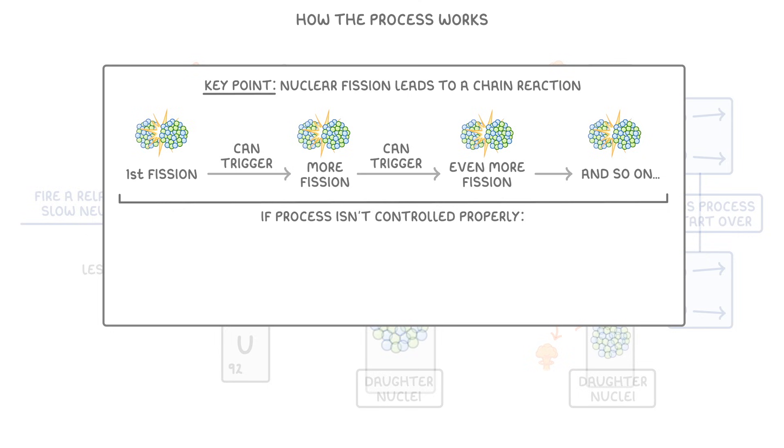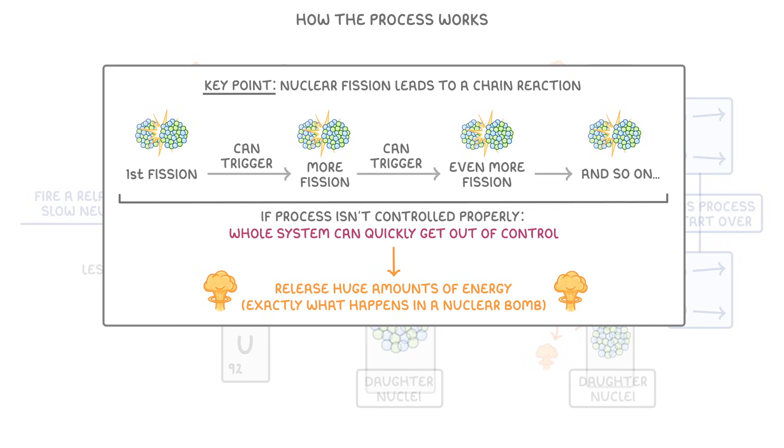If this process isn't controlled properly, then the whole system can quickly get out of control and release huge amounts of energy, which is exactly what happens in a nuclear bomb. In nuclear reactors though, the rate of fission has to be carefully controlled to stop it from getting out of control.